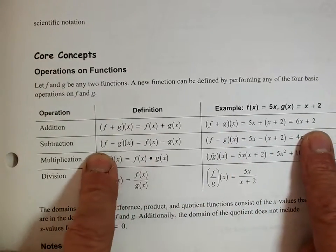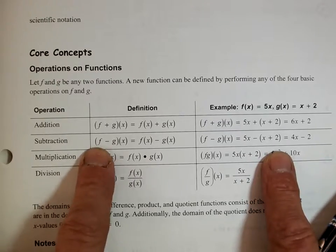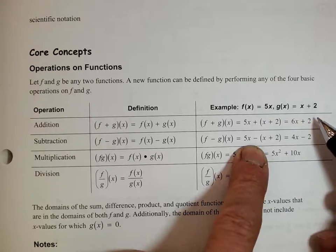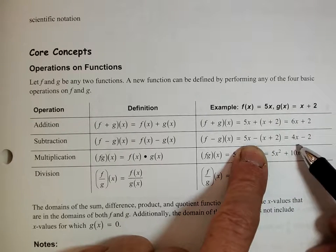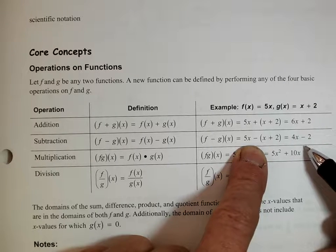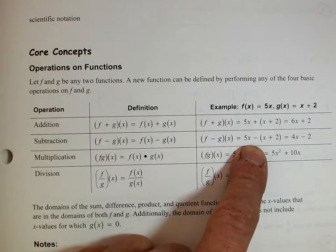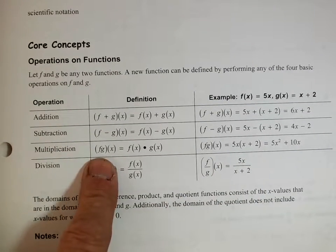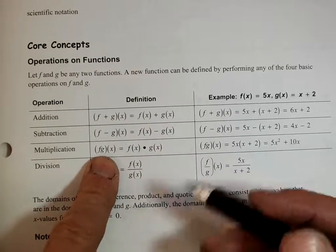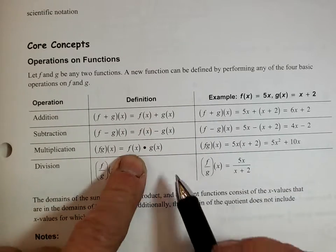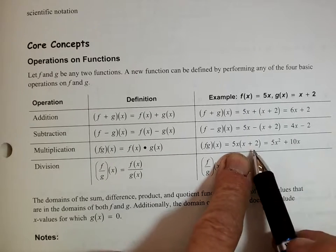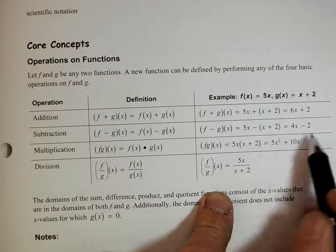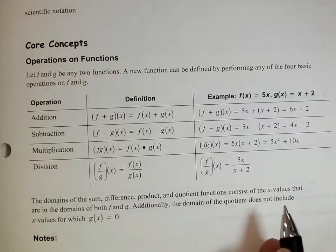On the second one we're going to subtract. The symbolism is F minus G, so we take F of X minus G of X. We take 5X and subtract X plus 2, giving us 4X minus 2. On multiplication, F and G together means F times G. So we multiply F times G: 5X times X plus 2. We distribute and get 5X squared plus 10X.